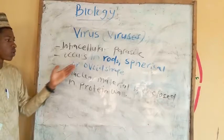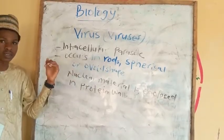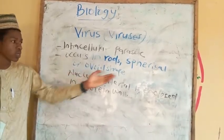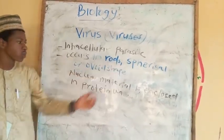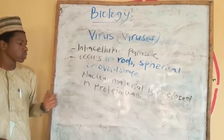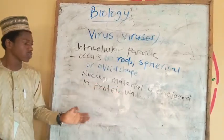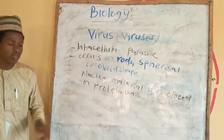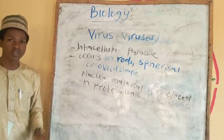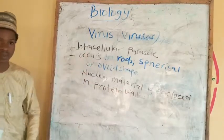As for their shapes, viruses occur in rod-like shape, spherical, or ovoid shape. Their nuclear material is enclosed in a protein coat.